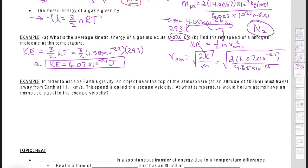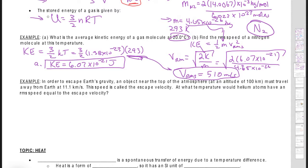Solving for v_rms: v_rms = √(2·KE / m) = √(2 × 6.07 × 10⁻²¹ / 4.65 × 10⁻²⁶) = 510 meters per second. So in nitrogen gas at 293 K (20°C), each particle is moving at approximately 510 m/s on average. Not every particle moves at exactly 510 m/s — that's what the RMS value represents.